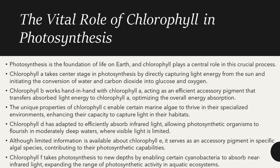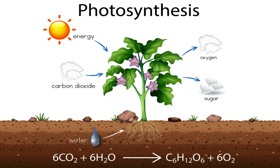Although limited information is available about chlorophyll E, it serves as an accessory pigment in specific algae species, contributing to their photosynthetic capabilities. Chlorophyll F takes photosynthesis to new depths by enabling certain cyanobacteria to absorb near-infrared light, expanding the range of photosynthetic activity in aquatic ecosystems. In this picture, we can see that the plant takes water from the ground and carbon dioxide from the surroundings, and uses sunlight energy to produce oxygen and sugar in the form of glucose.